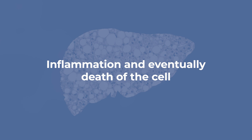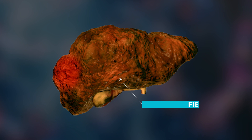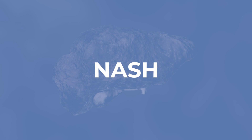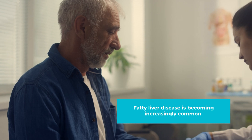The buildup of enough fat causes changes in the liver cell that lead to inflammation and eventually death of the cell. The damaged cell is then surrounded by scar tissue and the area is considered to be fibrotic. The more progressed changes in the liver are referred to as non-alcoholic steatohepatitis, or NASH. When treated at these stages of the disease, the damage may be reversible.